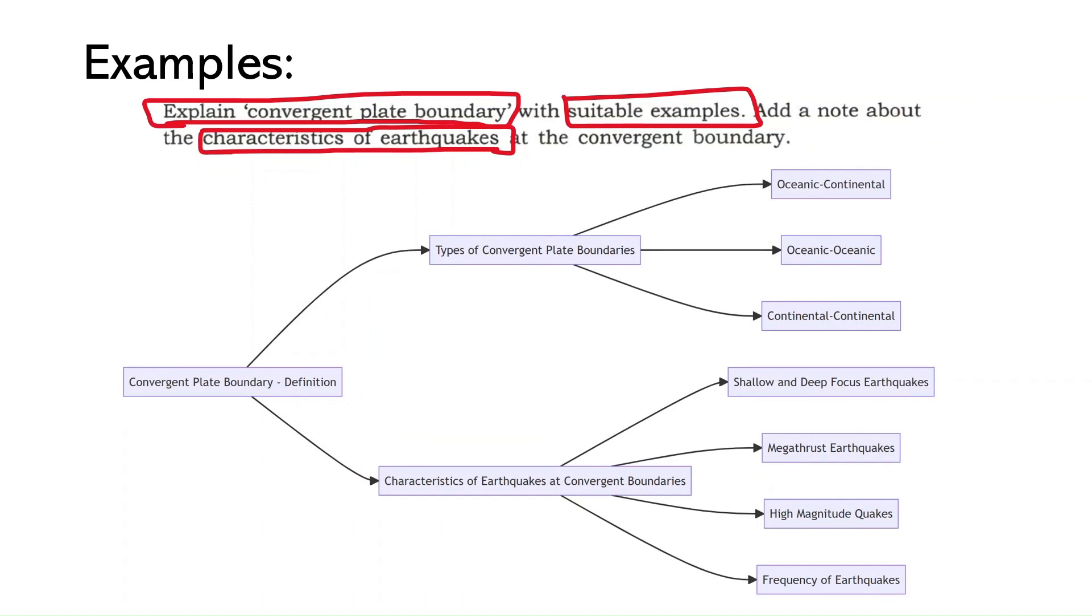In this step, structuring of your answer should be your priority. That means the introduction, main body, and conclusion of your answer should be clearly defined and visible. Therefore, I will begin with the definition of convergent boundaries and a brief mention of the types of boundaries in my introduction itself. By doing so, I am serving two purposes here. First, I am addressing the first part of the question directly in my introduction. And in the process, my introduction is shortened, which is also relevant as per the demand of the question.